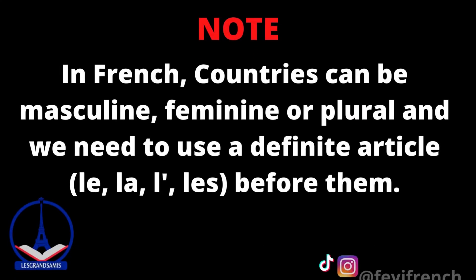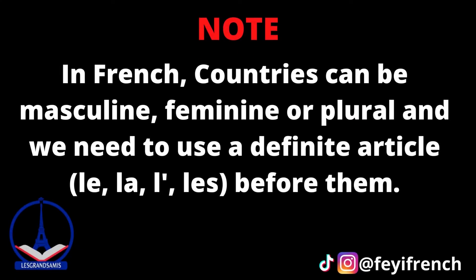In this lesson, we are going to be looking at a list of 20 different countries, their nationalities and primary languages. But before we do that, it is important to note that in the French language, countries can be masculine, feminine, or plural and we need to use a definite article before them.